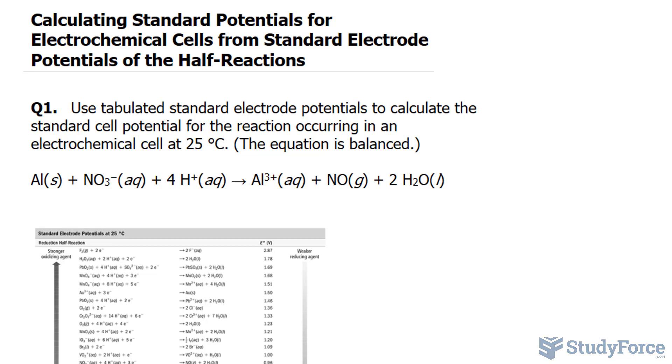The first thing that we want to do is begin by separating the half reactions. In this case, you can readily see that aluminum on the reactant side is being oxidized. Remember, aluminum in its solid state has an oxidation state of zero, and it's going from zero to three plus, so it's losing electrons, and that's oxidation. For the reduction half reaction, notice that we have NO3 minus and the four hydrogen ions forming NO and two molecules of water. That's the reduction.